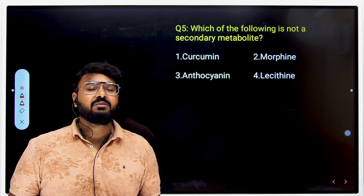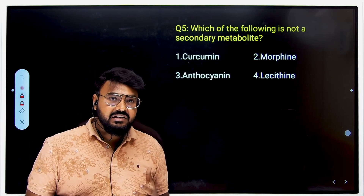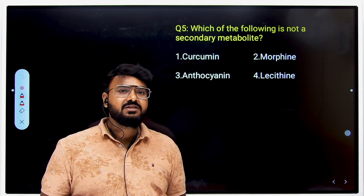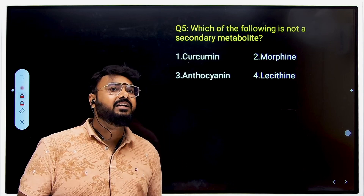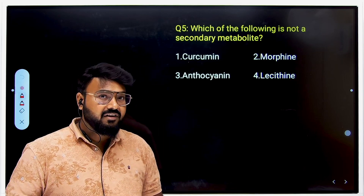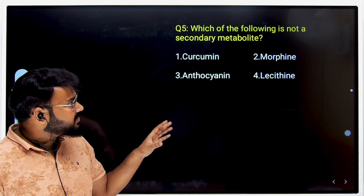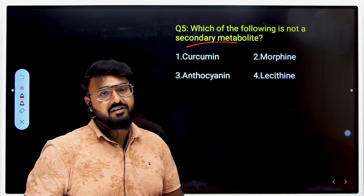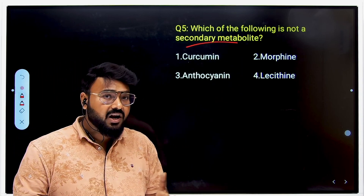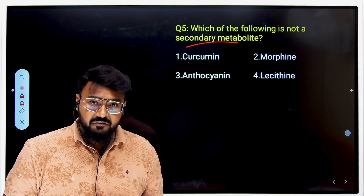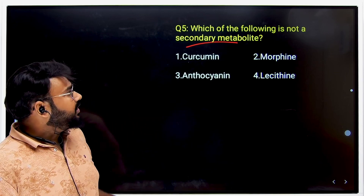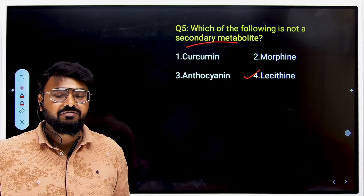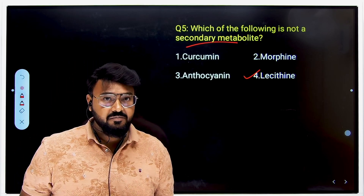The next question asks which of the following is not a secondary metabolite. Remember, in the NCRT, not just paragraphs but tables and diagrams are equally important. Secondary metabolites are like excretory or nitrogenous waste in plants. The answer is lecithin, because lecithin is a phospholipid found in the plasma membrane.